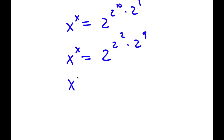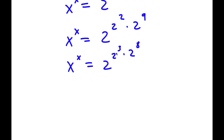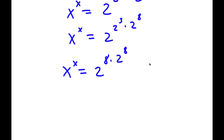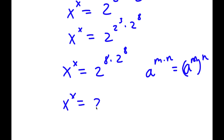This is also the same as 2 to the power of 2 to the power of 3, times 2 to the power of 8. Now, 2 to the power of 3 is simply equal to 8. So now I have x to the power of x equals 2 to the power of 8 times 2 to the power of 8. If I have something in the form a to the power of m times n, this equals a to the power of m to the power of n. So in this case, this can equal 2 to the power of 8 to the power of 2 to the power of 8.